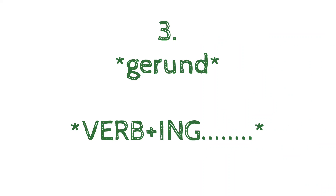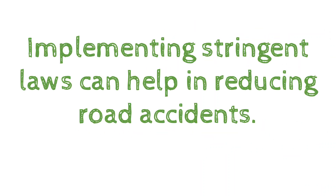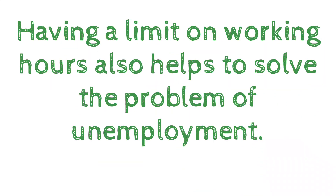The third structure is the gerund — verb plus '-ing' — used as the subject of a sentence. For example: 'Implementing stringent laws can help in reducing road accidents.' Another example: 'Having a limit on working hours also helps to solve the problem of unemployment.'